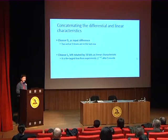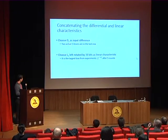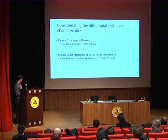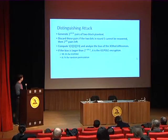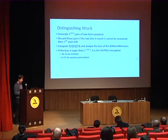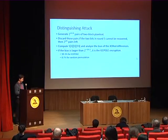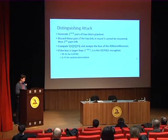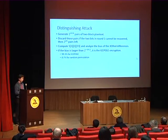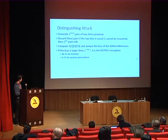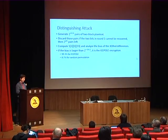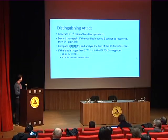We concatenate the differential and linear characteristics, choosing D2 as input difference and L1 left-rotated by 33 bits as the linear characteristic, giving a large bias experimentally. For the distinguishing attack, we generate 2^33.9 pairs of two-block plaintexts, discard pairs that cannot recover one bit in the fifth round, leaving 2^21 pairs. We compute these bits, analyze the XOR differences, and find the largest bias. If this bias is larger than 2^{-10.2}, we claim Xoodyak is not a random permutation, with a success rate above 99%.